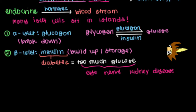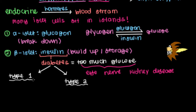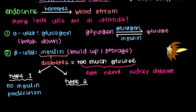There are two types of diabetes: type 1 and type 2. The way you differentiate them is based on how they're caused, which all points back to insulin. In type 1 diabetes, there is no insulin production at all. Because of that, we're not able to store sugar in glycogen, so glucose is all over the place causing eye, nerve, and kidney disease among other complications.